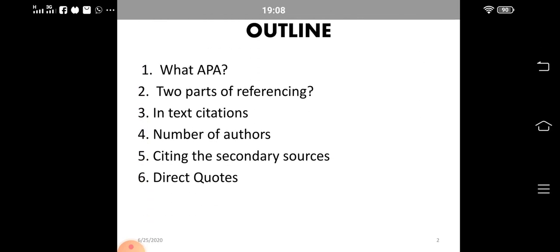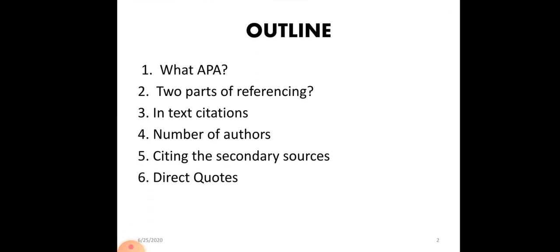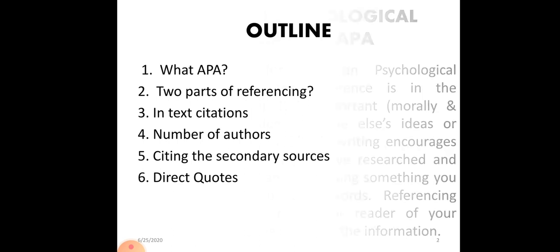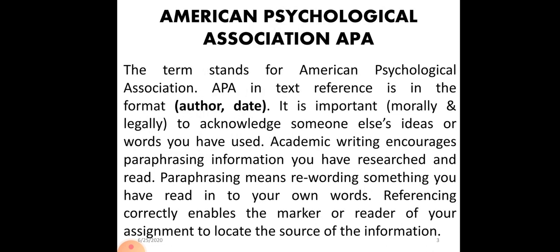First of all, see the outline. In the outline we will see what APA is. We'll study two parts of referencing: in-text citations, number of authors, citing secondary resources, and we'll study direct quotes. So APA stands for American Psychological Association.